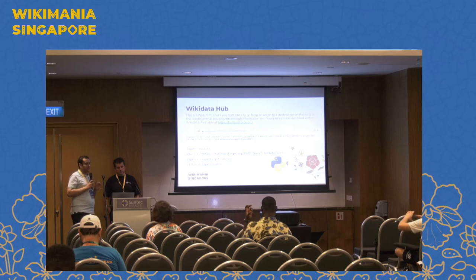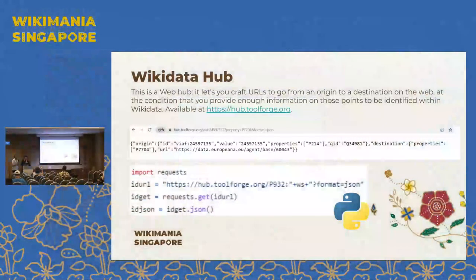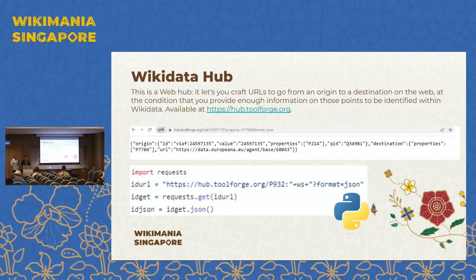The third tool is Wikidata Hub, an API that allows you to identify the Wikidata item corresponding to an external identifier. As you know, there are many external identifiers represented for every item in Wikidata — for example, Bibliothèque nationale de France, WorldCat, OCLC, MeSH medical subject headings, UMLS. You can enter the external identifier and that API will find the right Wikidata item corresponding to it. Because it returns JSON, you can process it using the Requests library.